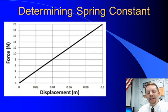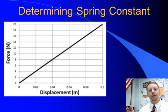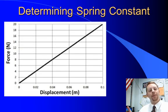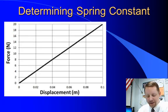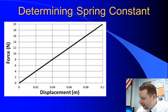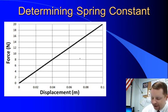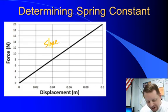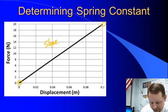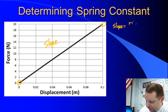To determine the spring constant, we'll take a spring at its equilibrium position and stretch or compress it a certain amount, then measure the force required. Or we'll apply a certain force and measure how much it's displaced. We'll do this again and again to give us a graph of force versus displacement. To find the spring constant, we'll take the slope of this graph — rise over run.